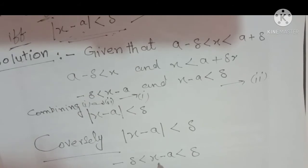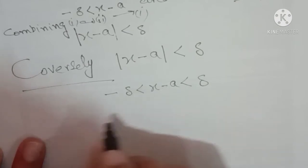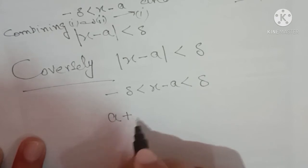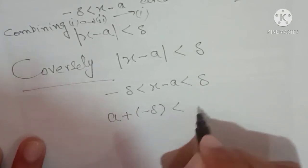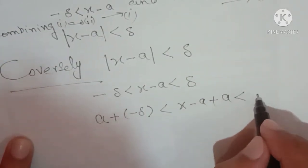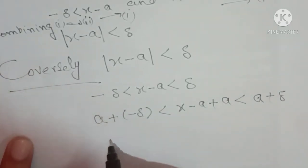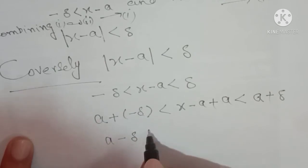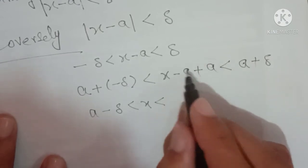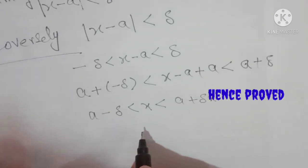Now we add a throughout the inequality. Adding a gives: a minus delta < x < a plus delta. We can see that a cancels on the middle term, leaving x, and we get a minus delta on the left and a plus delta on the right.